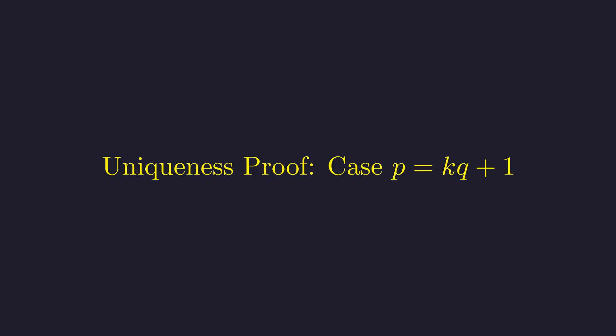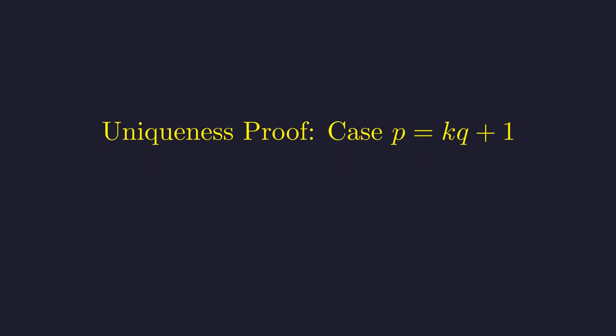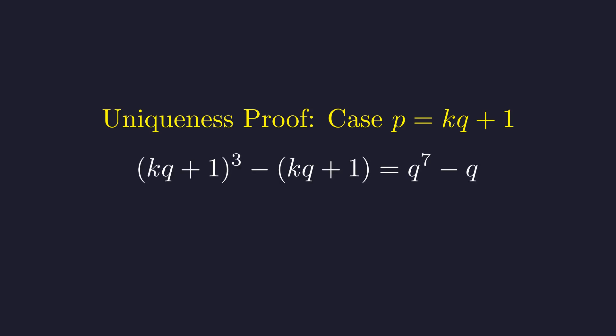We will now analyze the first case, p equals k times q plus 1. We substitute this expression for p into the equation. The substitution results in this equation relating k and q. To proceed, we must expand the terms on the left side to form a polynomial in k and q.